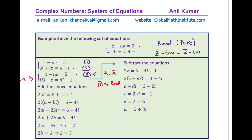Now adding equation three and equation four: the Z terms cancel, leaving 2i·(conjugate of Omega) on the left, and 5 plus 4i plus 1 equals 6 plus 4i on the right. Since omega is a plus bi, its conjugate is a minus bi. Substituting, the left side becomes 2i·(a minus bi), and the right side is 6 plus 4i.